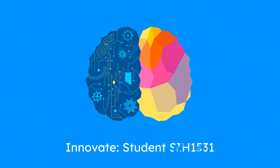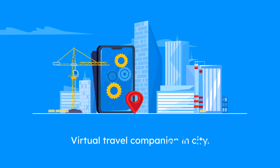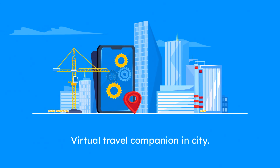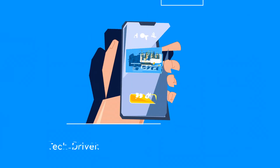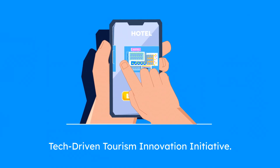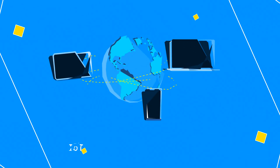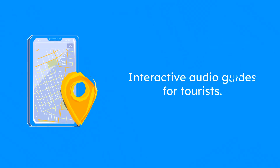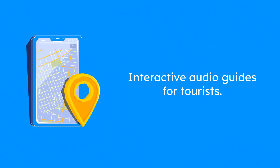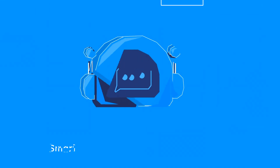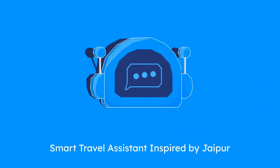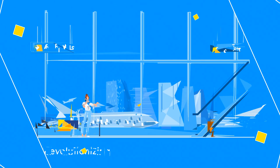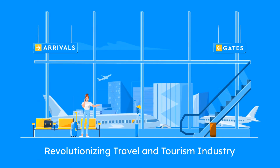PSIH 531 Student Innovation. Imagine stepping into a new city and having a personal guide right at your fingertips. This project aims to revolutionize tourism by integrating advanced technology. Picture an IoT network that serves as a high-tech tour guide, including interactive audio guides and real-time maps that help tourists navigate and explore attractions effortlessly. Think of it as a smart assistant to enhance your travel experience, inspired by the impressive tech used in Jaipur's historic sites. It's a game-changer for travelers and a boost for the tourism industry.